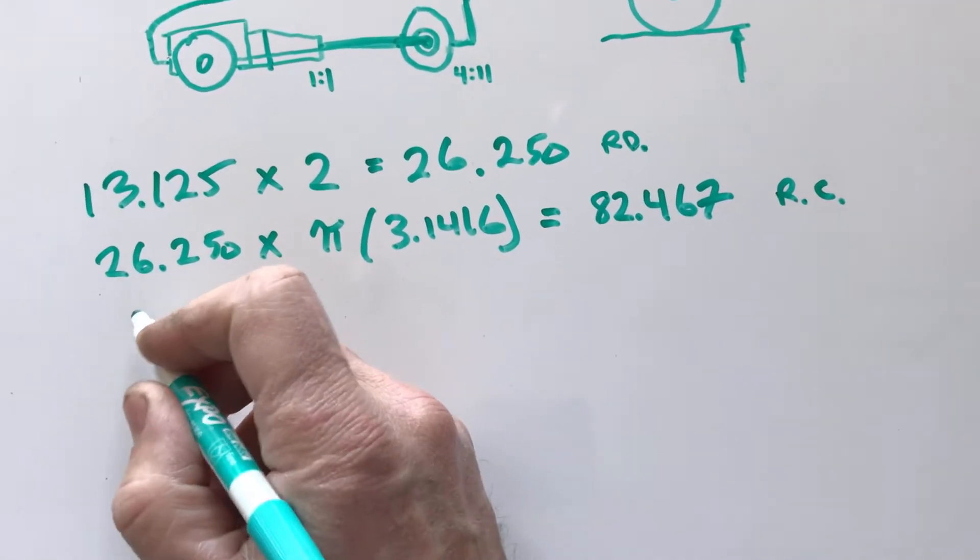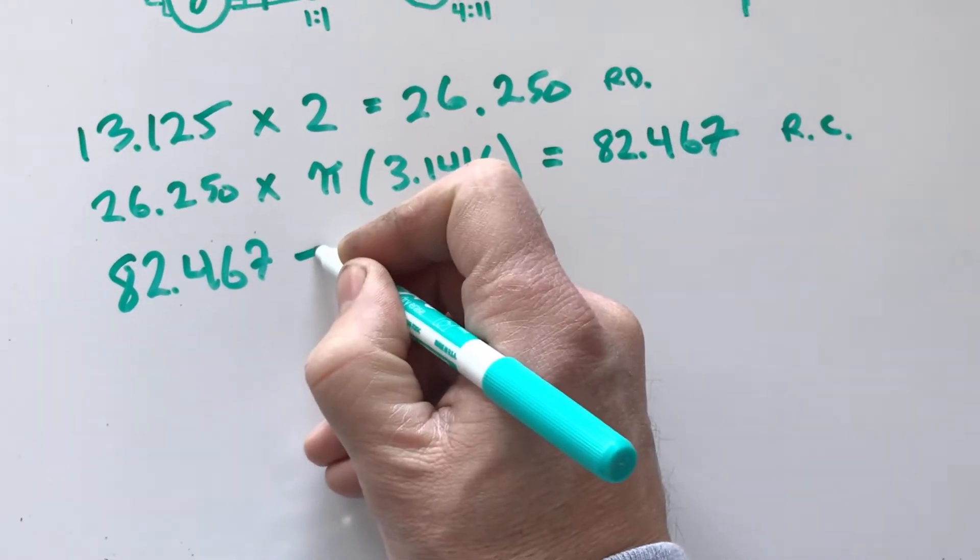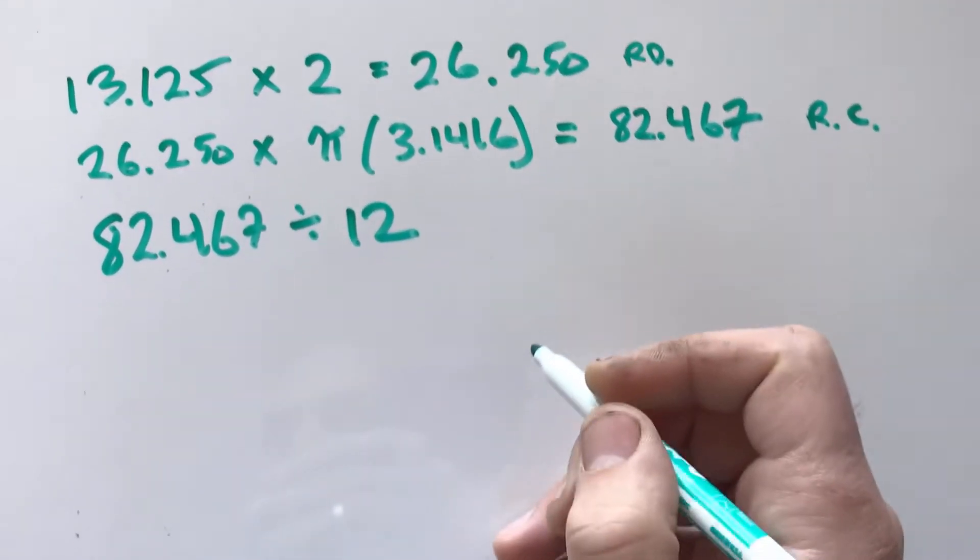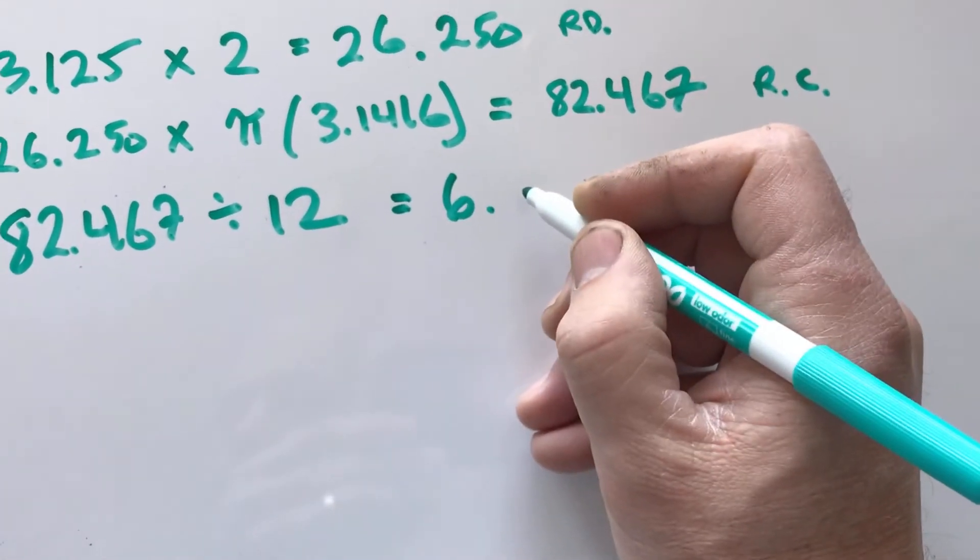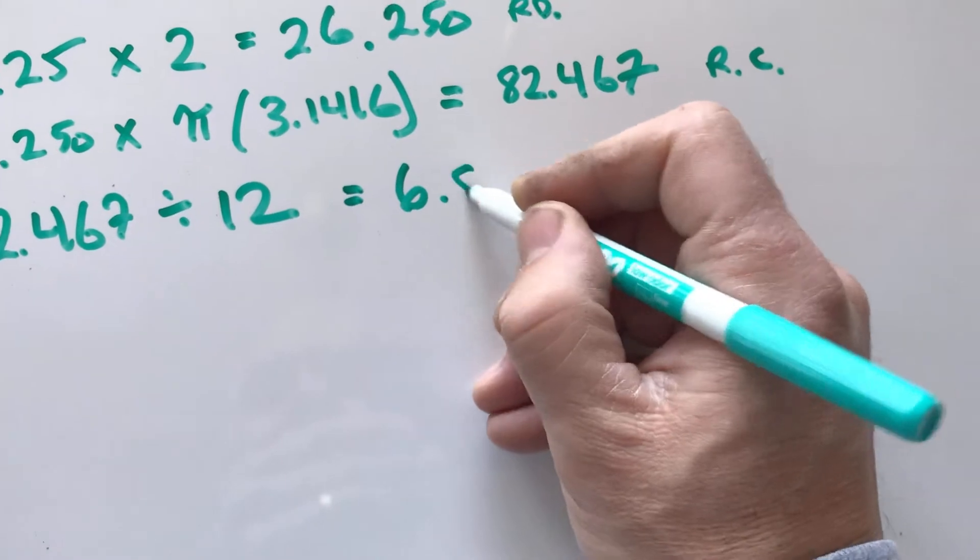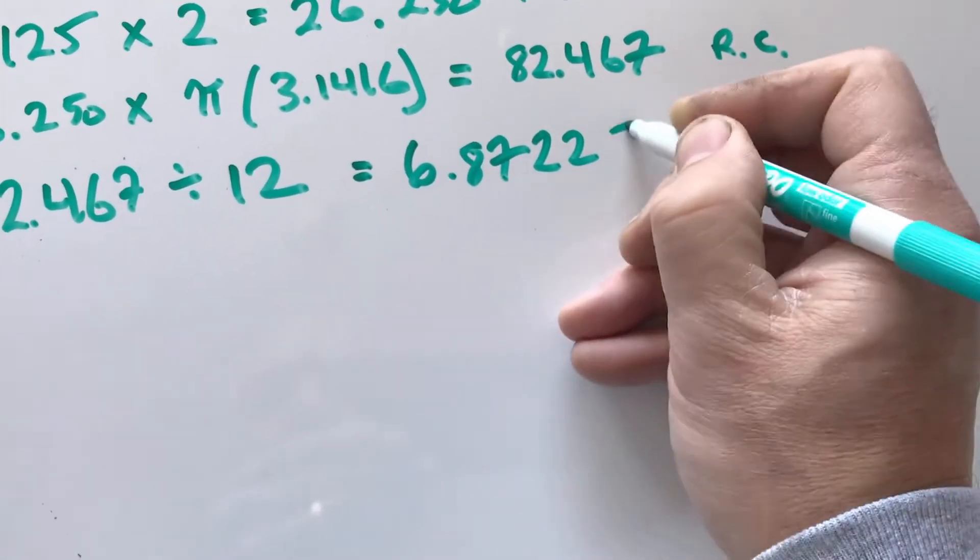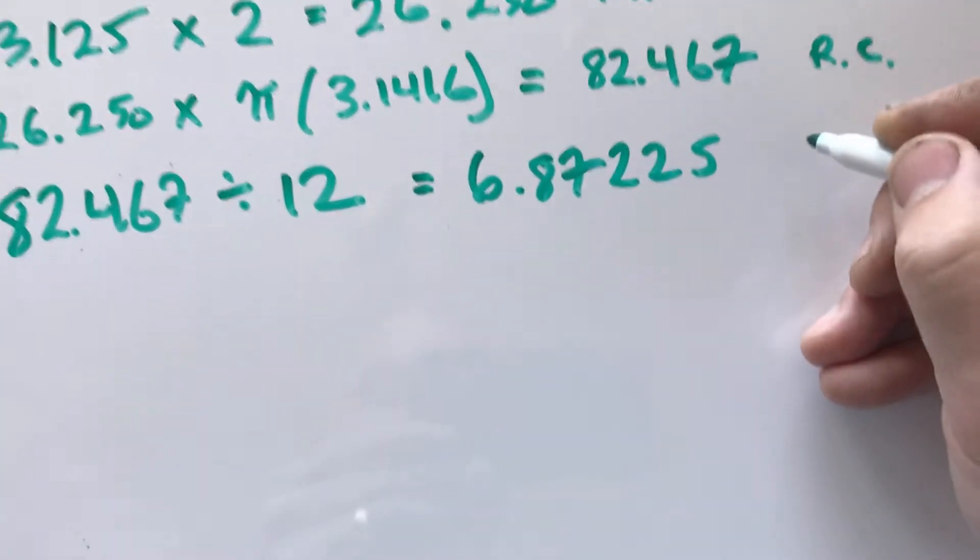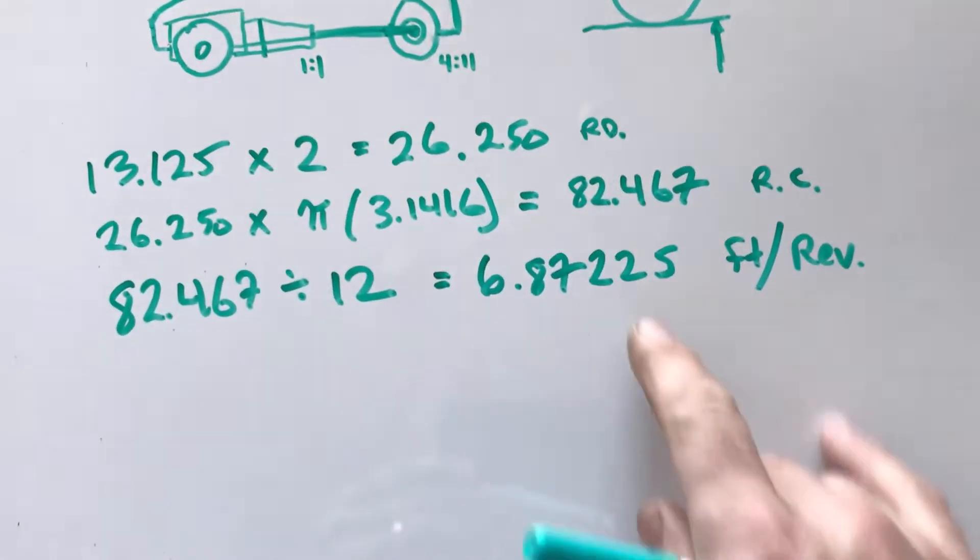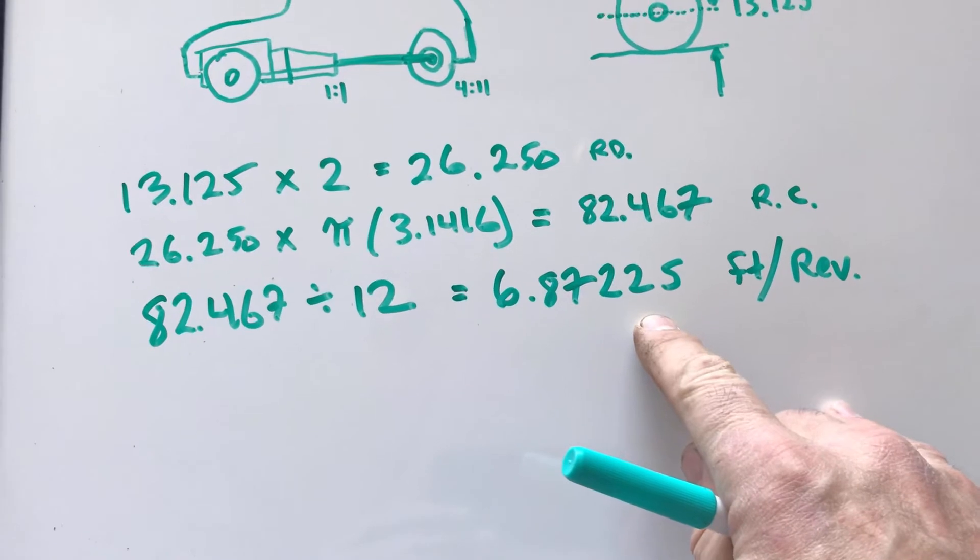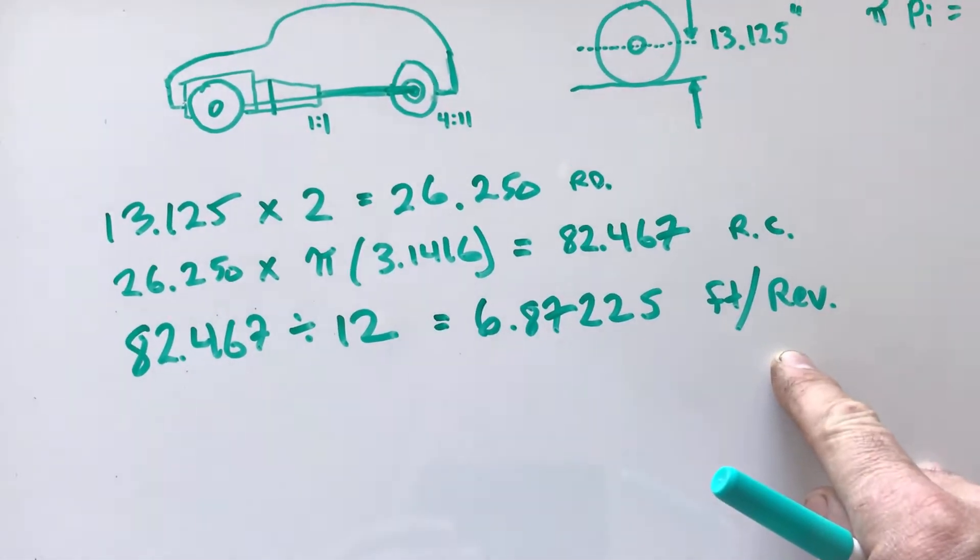Next we need to take our rolling circumference 82.467 and divide it by 12, which equals 6.87225. That gives us how many feet we cover per revolution of the tire. We cover 6.87225 feet on the ground every time the tire turns once.